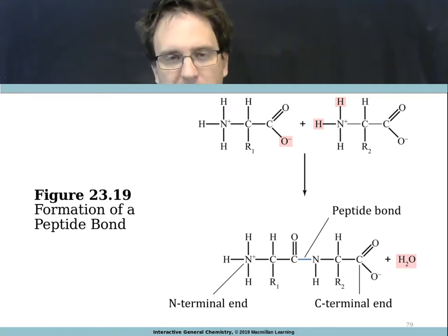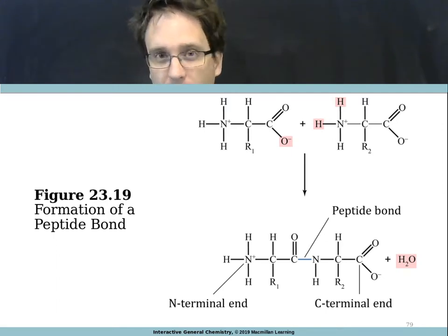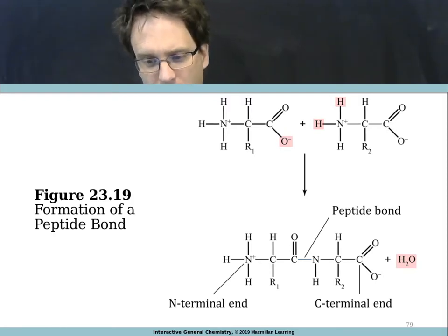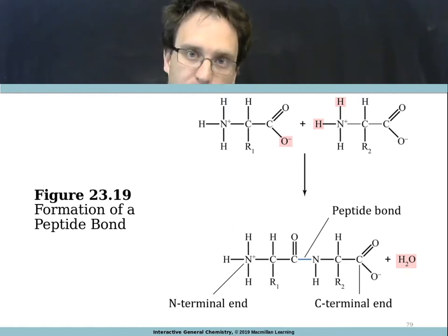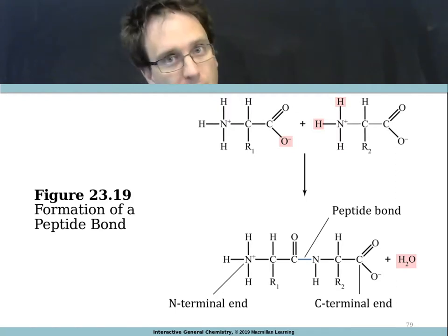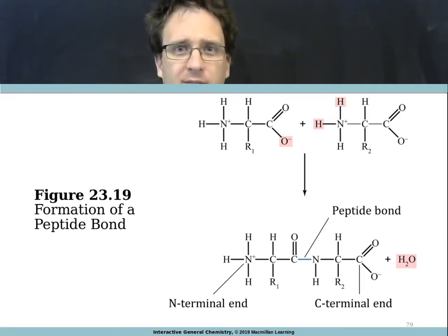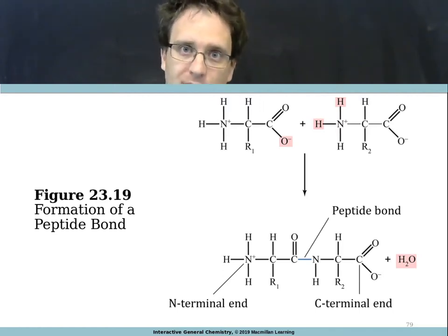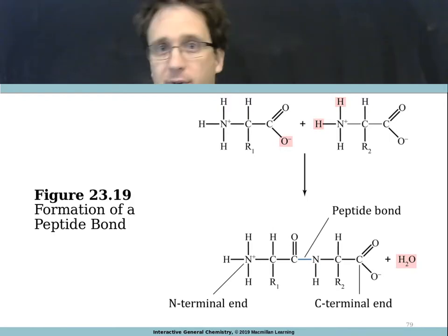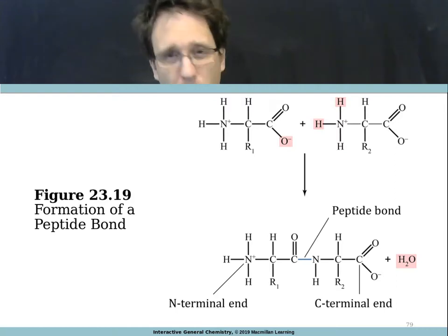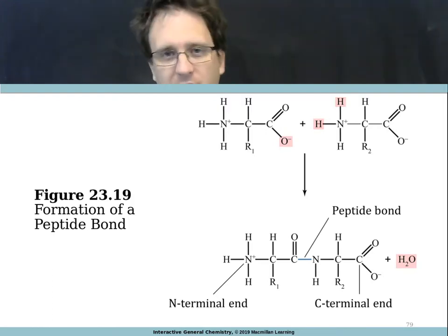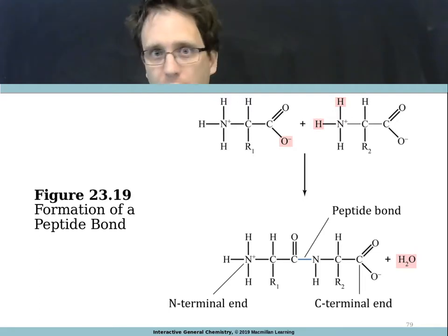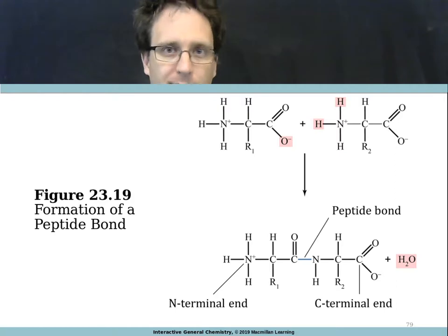Every peptide or protein has one end that ends with the amine group — we call that the N-terminal end — and the end that ends with the carboxyl group is the C-terminal end. A peptide is a group of amino acids bonded together, like a very small protein. A protein is when you've got a lot of amino acids — somewhere around 10 to 20 amino acids is roughly when you graduate from being a peptide to a proper protein.